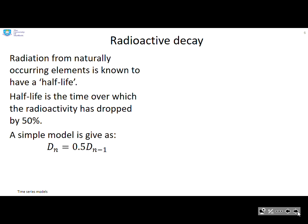What about radioactive decay? Radiation from naturally occurring elements is known to have a half-life. This is a term which you will probably come across. Half-life is the time at which the radioactivity has dropped by 50%. So you're talking about a model of this form. Radioactivity D at time n is 0.5 what it was at time n minus 1, where the difference between those two times is the half-life.